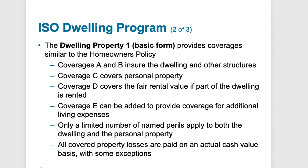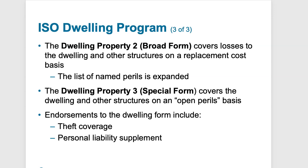Let's look at dwelling property two and dwelling property three — the broad form and the special form. The broad form provides more extensive coverage than the basic form. Covered losses to the dwelling and other structures are indemnified on the basis of replacement costs rather than actual cash value, which is important so that you can get the structure rebuilt. The broad form also automatically includes additional living expenses — what was Part E in the basic form. It also includes all the perils from the basic form plus extended coverage for wind, hail, smoke, and so on.